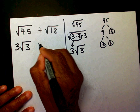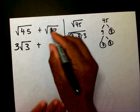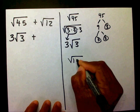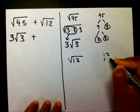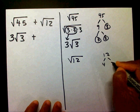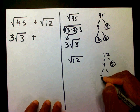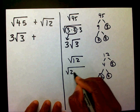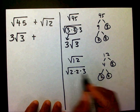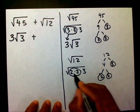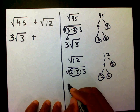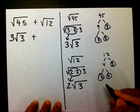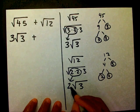Now let me simplify radical 12. I'll make a factor tree — that gives me 2, 2, and 3. Underneath I write 2, 2, and 3. Two times 2 is 4, and the square root of 4 is 2. I put that outside, and 3 goes inside. So another way of writing radical 12 is 2 radical 3.